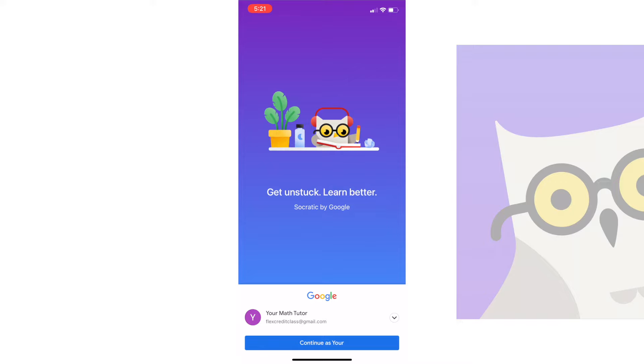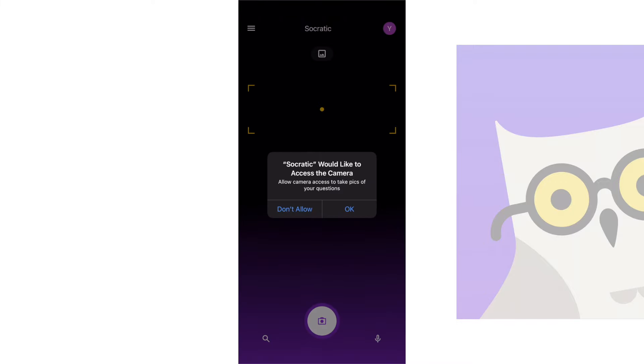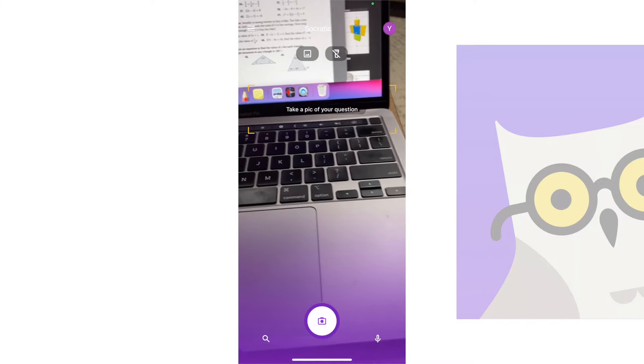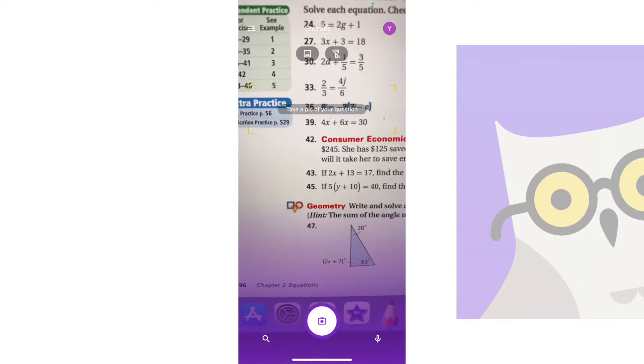When you first open the app, it asks you to pick a Google account to log into, which I found was kind of weird. I picked one of my accounts and it brought me to their camera page.